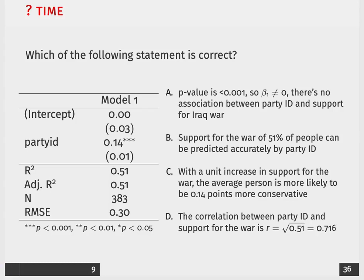I think the reason for why B is incorrect is self-evident based on my response for why D is the correct answer. So the way that we interpret the R-squared value is that party ID, because it's our only predictor, helps explain about 51% of the variation in our outcome. It does not mean that 51% of people that we can predict accurately, only 51% of people.